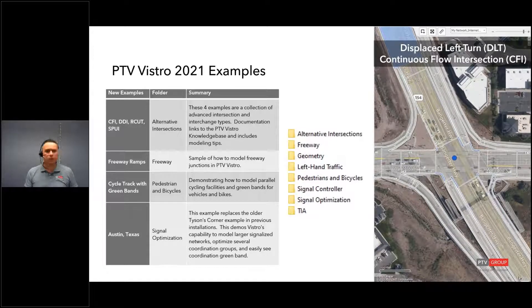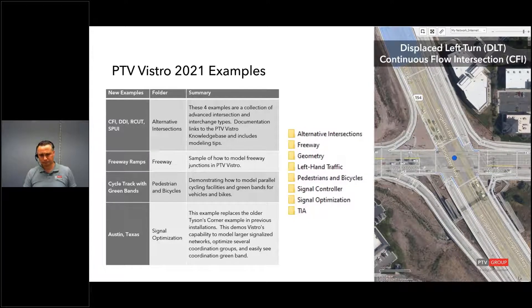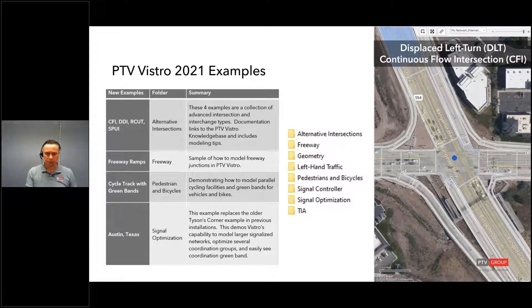Another new example is a freeway ramp example in Denver, Colorado — a basic merge-diverge section showing that you can code merge and diverge sections if you're planning to do micro simulation later. Vistro doesn't have the capability to do the actual freeway analysis, but you can have that on the micro simulation side. You may have seen the cycle track example from our PTV Talks — that's included in the example files as well with documentation. We also have a new city grid model of Austin, Texas, which you'll probably see in today's tips and tricks session.